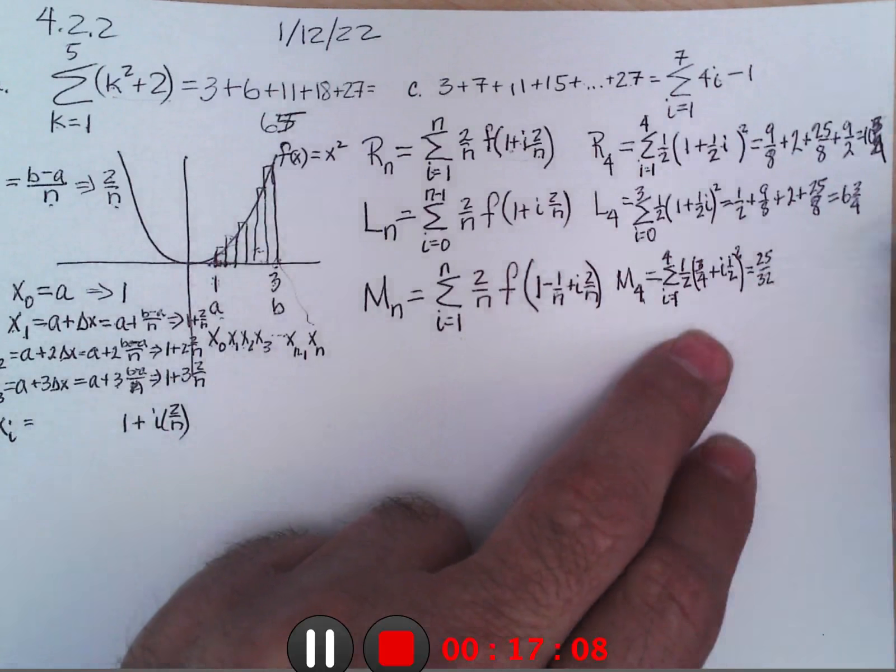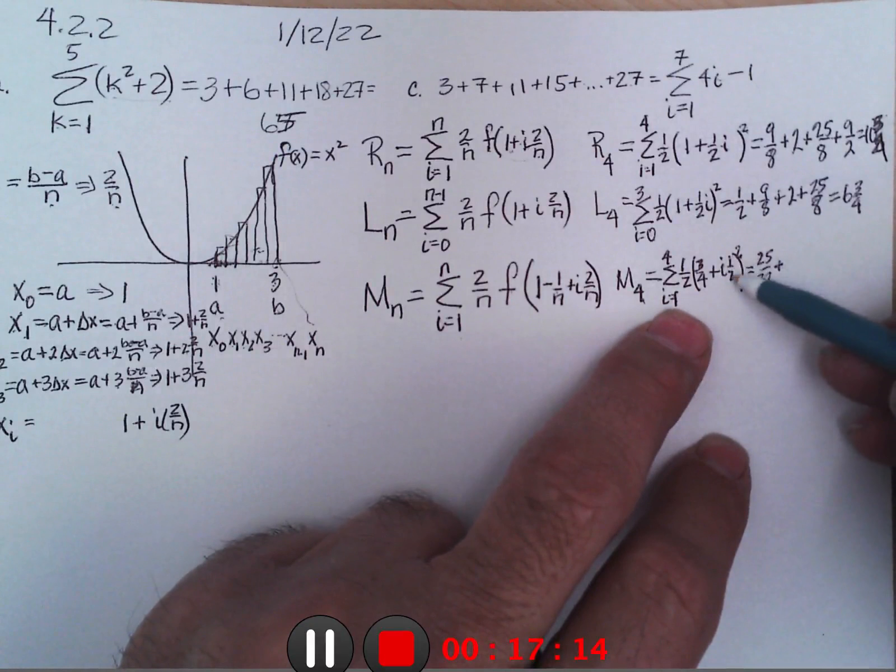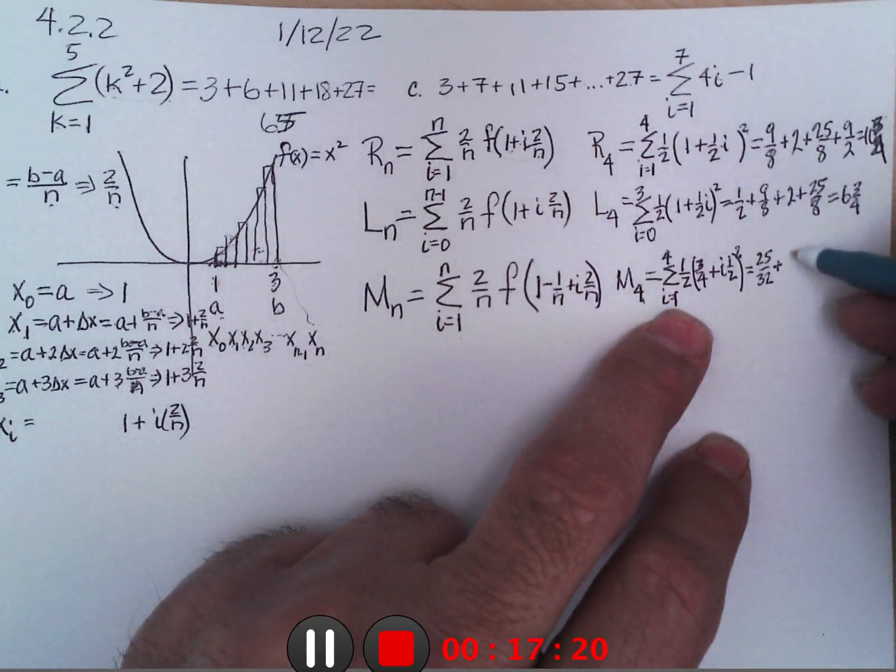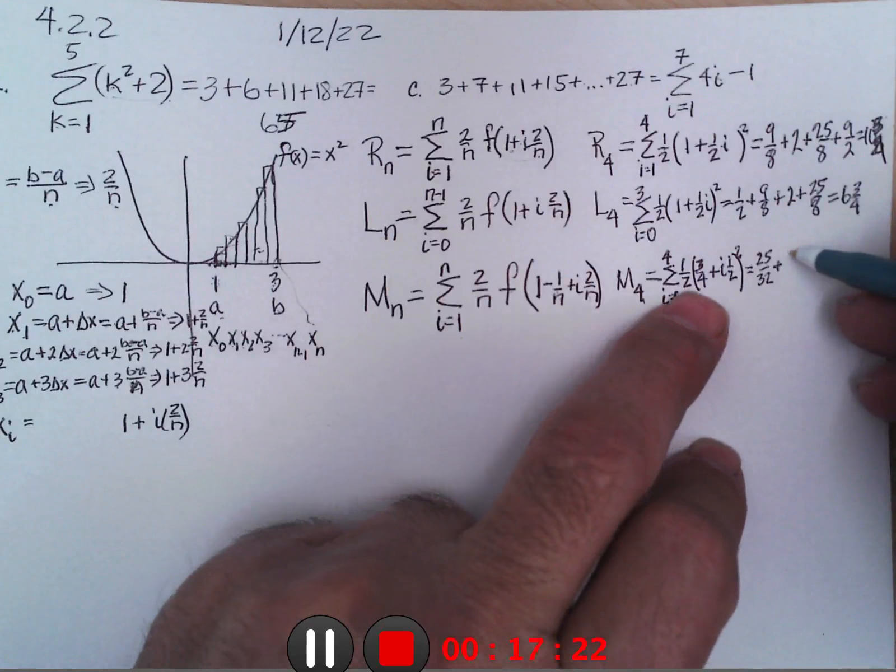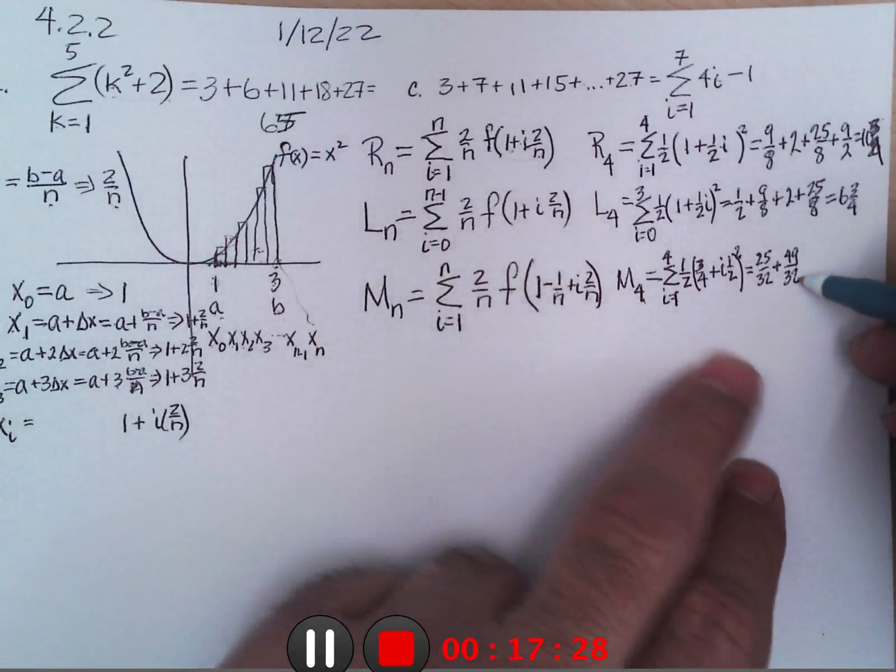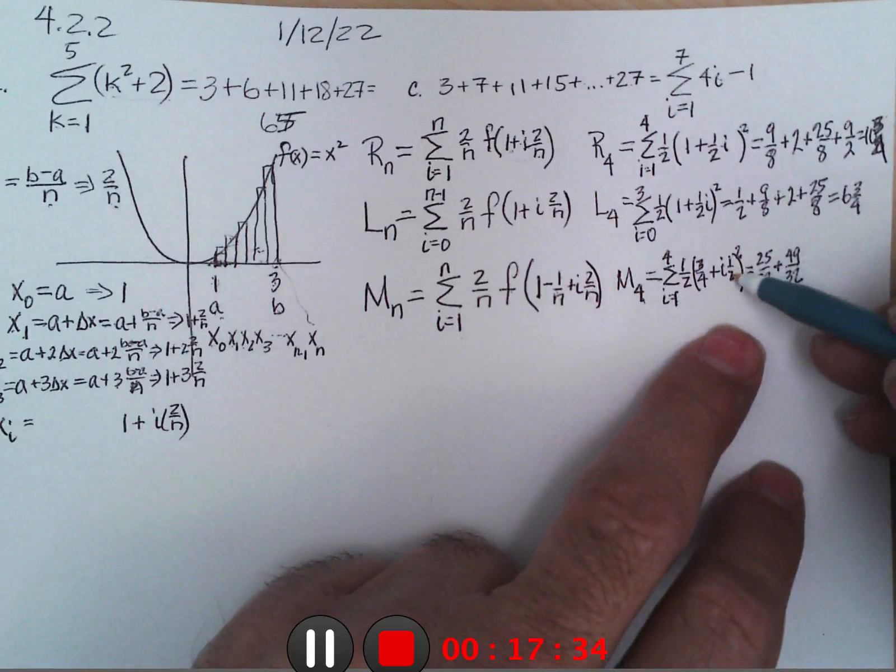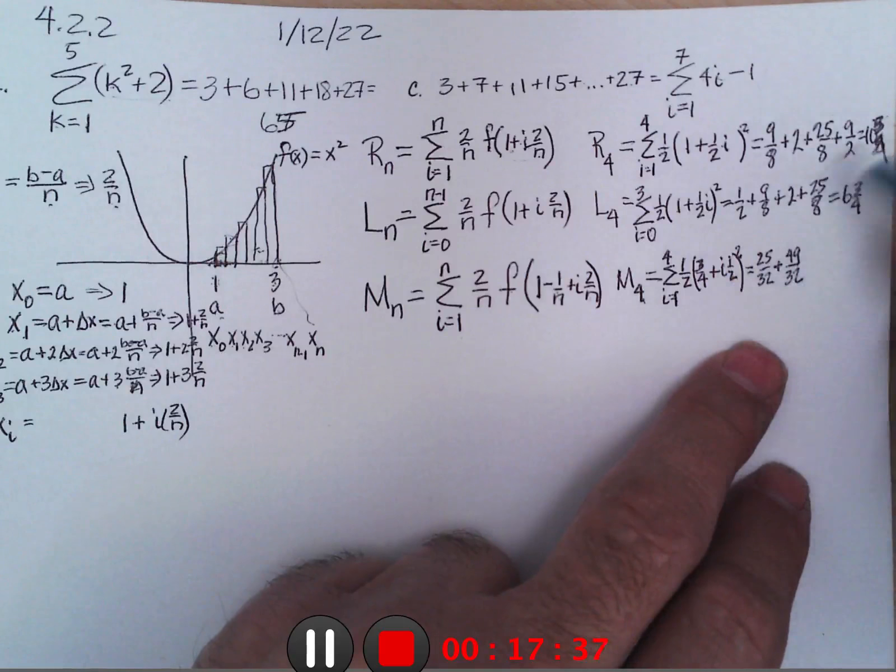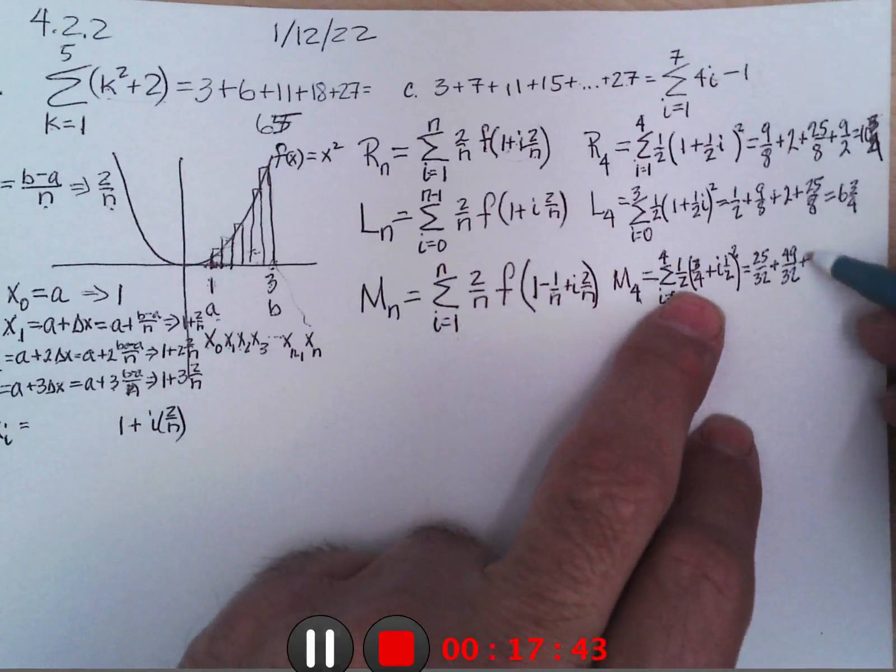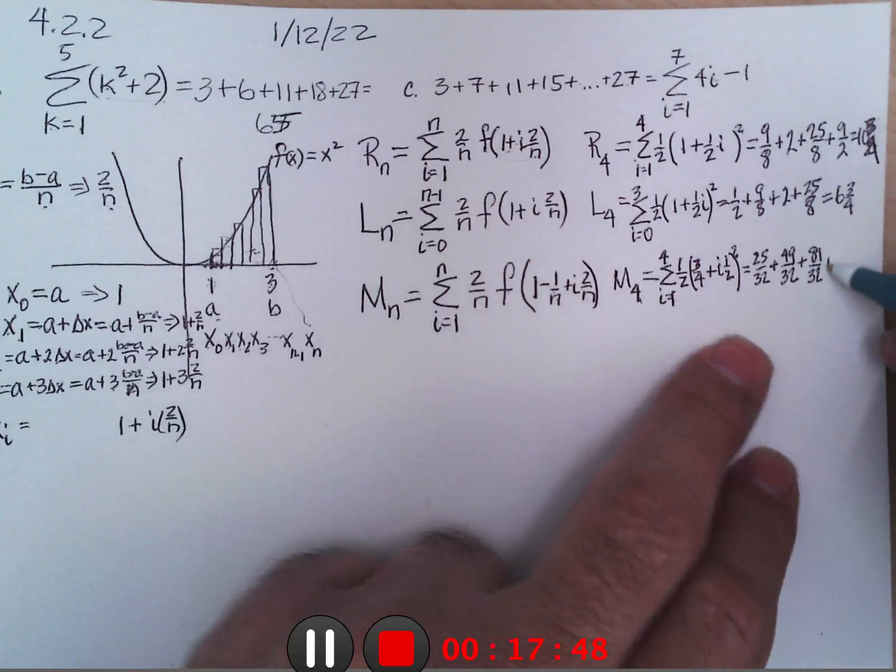Which equals, when i is 1, 1 half plus 3 fourths is 2 fourths plus 3, 5 fourths squared, 25 sixteenths times 1 half is 25 thirty-seconds. Plus put in 2, I get 1 plus 3 fourths is 7 fourths squared is 49 sixteenths times 1 half is 49 thirty-seconds. Put in 3, 3 halves which is 1 and 1 half plus 3 fourths is 2 and 1 quarter or 9 quarters squared is 81 sixteenths times 1 half is 81 thirty-seconds. And then putting in 4,